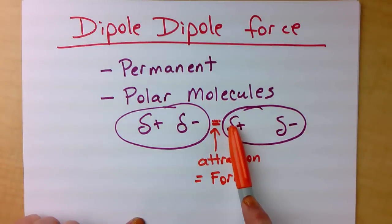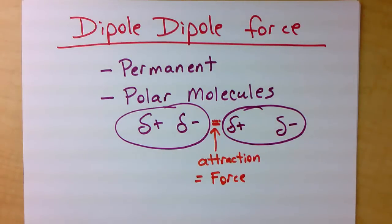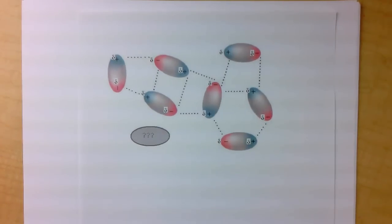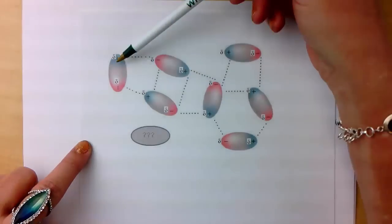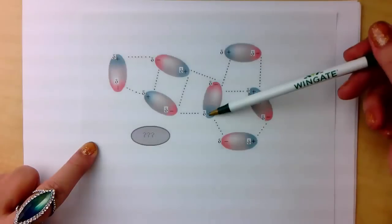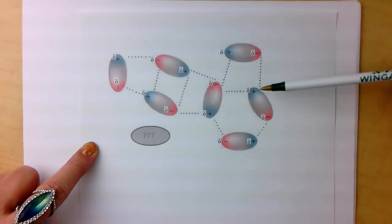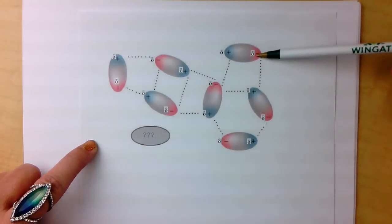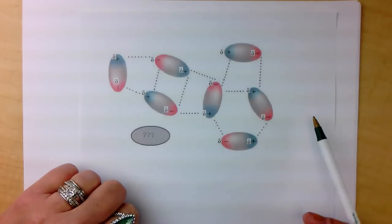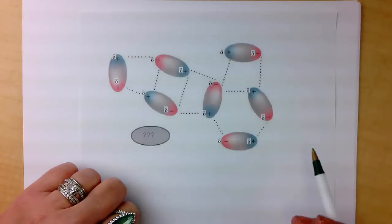The dipole-dipole force is permanently there all the time, and you have to have polar molecules. Here's another picture of several polar molecules all lined up, with dotted lines showing the force. We have delta plus to delta minus, delta plus to delta minus — it's always opposites that are being attracted. Opposites attract at the ends of the dipole.